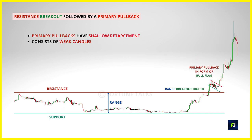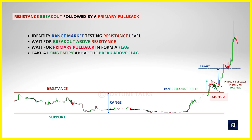When the market finally breaks out, traders who missed the breakout move can wait to enter at the first indication of a pullback. These primary pullbacks usually have a shallow retracement as not many traders want to trade against strong momentum. To trade this: identify a range market or a market testing a resistance level for a while, let the market break out of that resistance level, wait for a bull flag pattern to form as a primary pullback, and then take a long entry on the break above the highs.